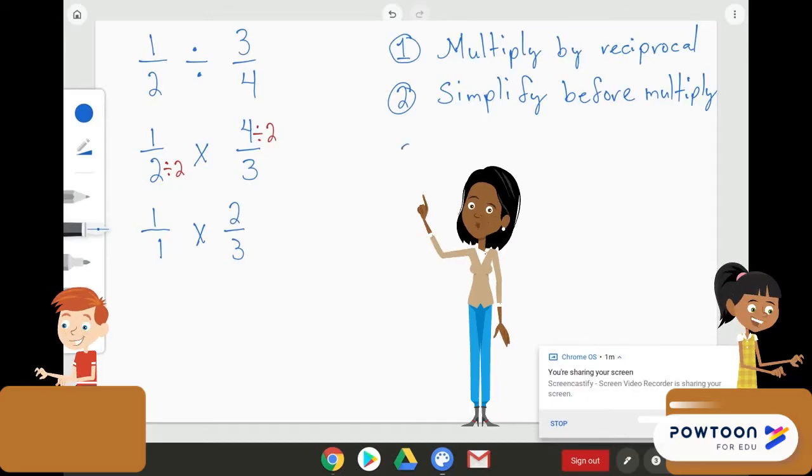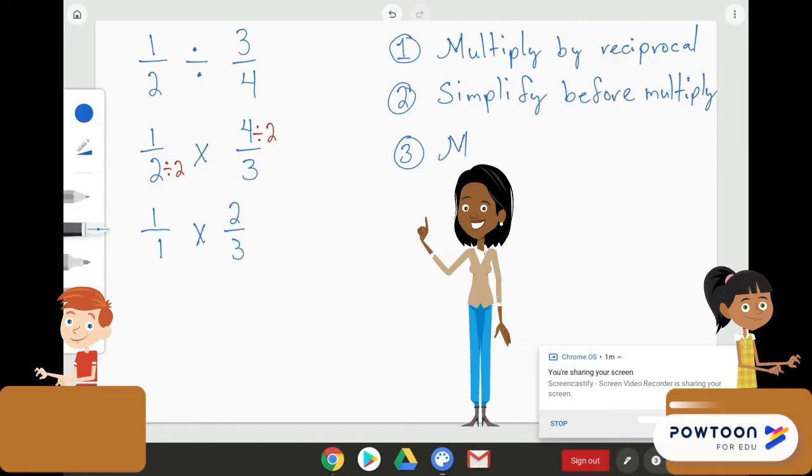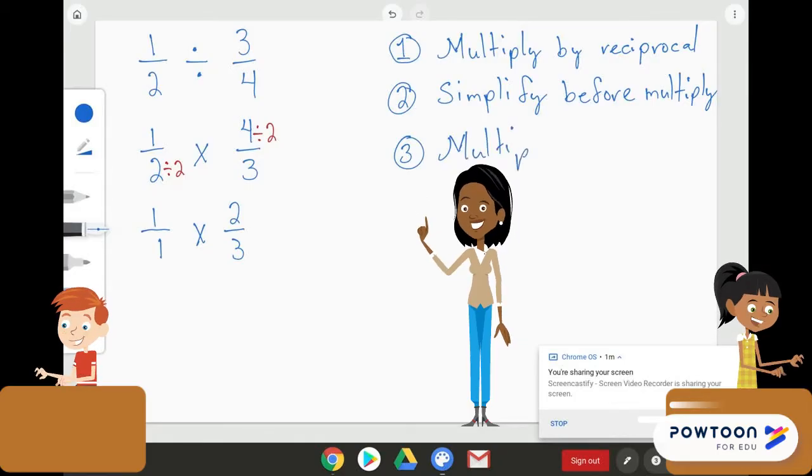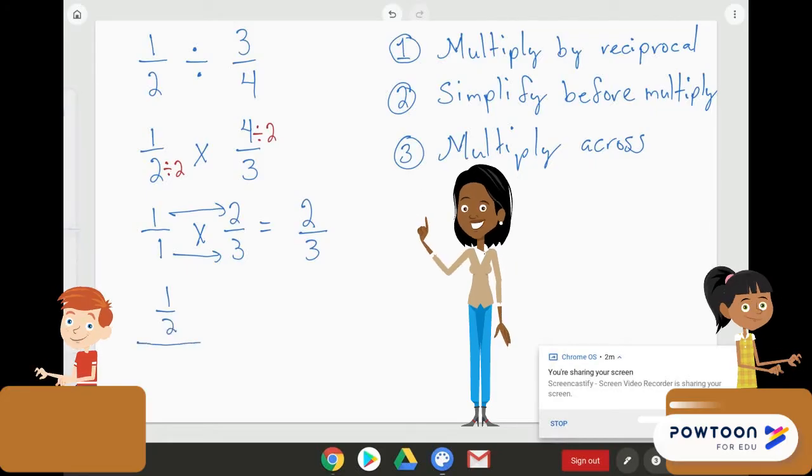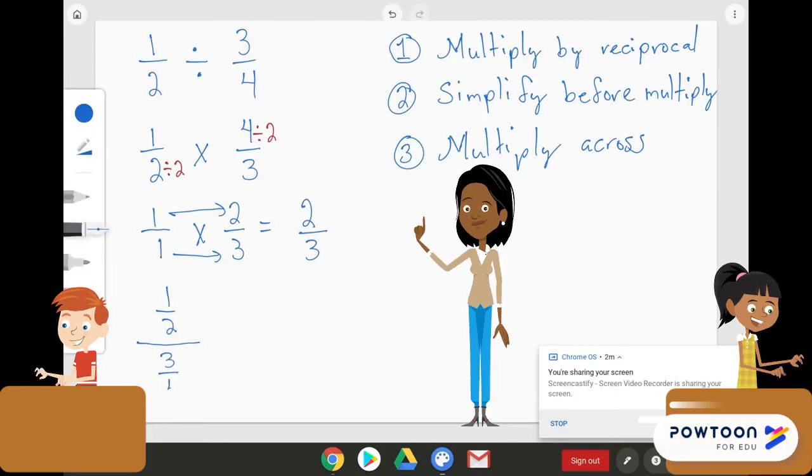So, the next thing we're going to do is to multiply across. So, 1 times 2 equals 2, and 1 times 3 equals 3. Therefore, the complex fraction 1 half divided by 3 fourths is just equal to 2 thirds.